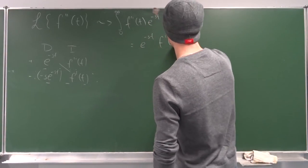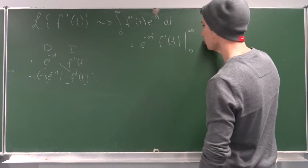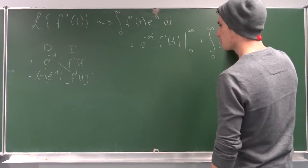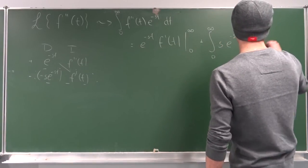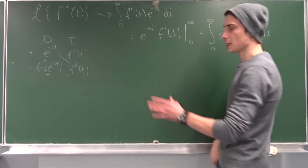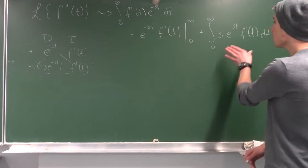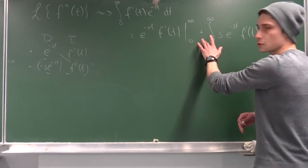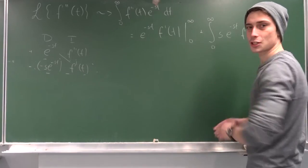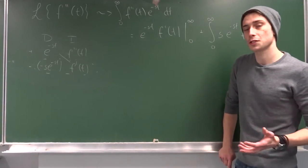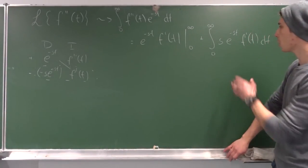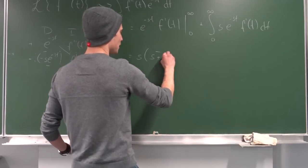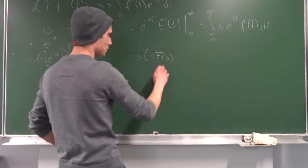In the limits from zero to infinity, minus and minus becomes positive, so that's plus the integral from zero to infinity of s times e to the minus st times f'(t) dt. Now you can see why I just took one step of integration by parts, because we already know what this integral is. Using linearity of the Laplace transform, we bring s to the outside, and this integral is just the Laplace transform of the first derivative f'(t). So this part is s times [s·F(s) minus f(0)].